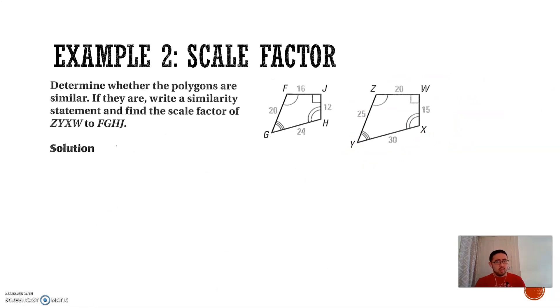Second example: let's say I want to determine the scale factor of two polygons that are similar. Here, we are told that ZYXW and FGHJ are similar. Since they are similar, that means their corresponding angles are congruent: F and Z, G and Y, H and X, and J and W.